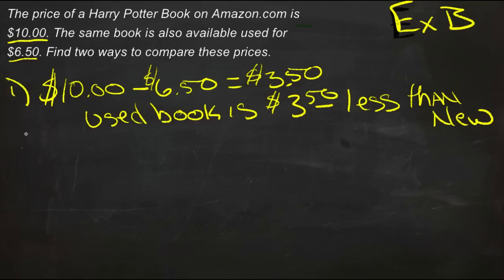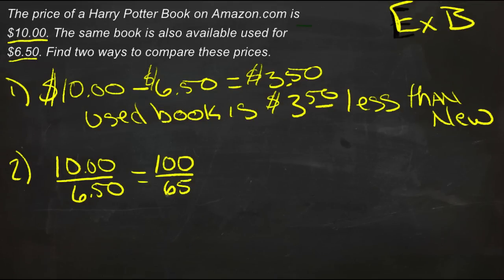Or we could use a ratio. If we set up a ratio, we'd be comparing the price of the new book, $10, to the price of the used book, $6.50. So we'd be comparing $10 to $6.50, which would be the same as comparing $100 to $65. Then that would be the same if we reduced by $5, that would be saying $20 compared to $13, which means that the new book is almost twice as much as the old book.